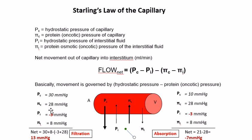At the venous end, all other pressures remain the same, but capillary hydrostatic pressure drops to 10 mmHg because pressure was already dissipated at the arterial end. Substituting: 10 + 3 + 8 = 21 mmHg outward forces minus 28 mmHg opposing (plasma oncotic) gives a net reabsorption of −7 mmHg. So at the venous end the pressure is −7 mmHg, and at the arterial end the net filtration pressure is +13 mmHg.